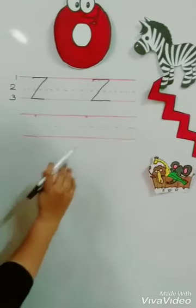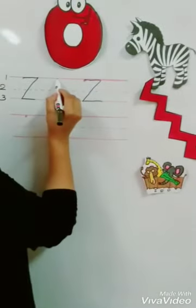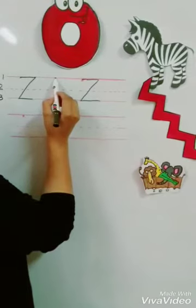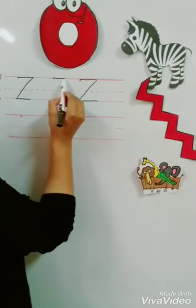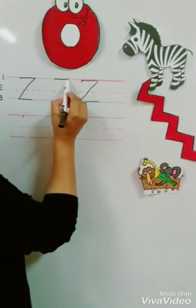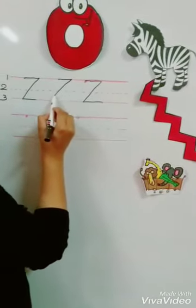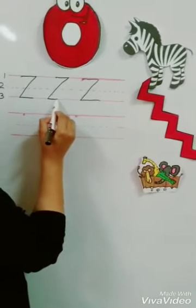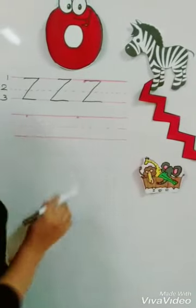Okay. One more time. From the dot, dash on line number one, sloping line down and dash again. Bravo.